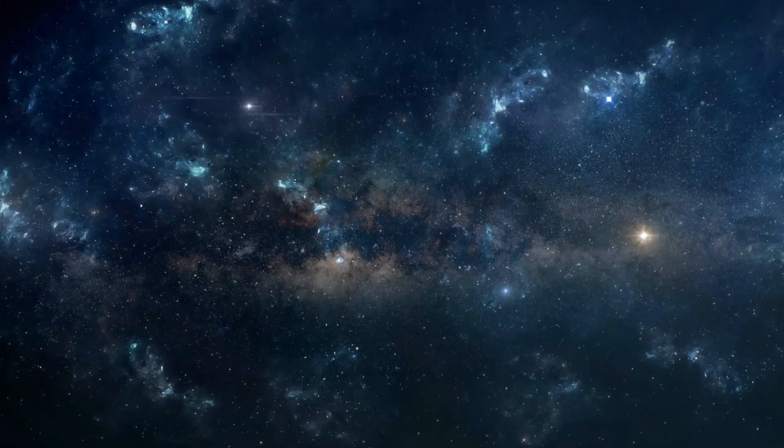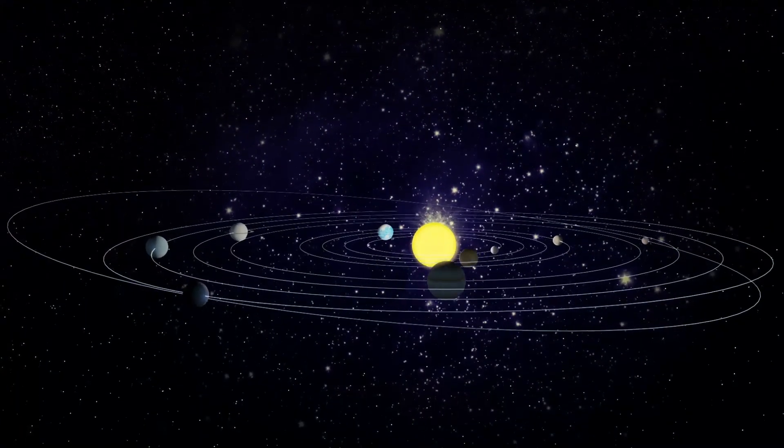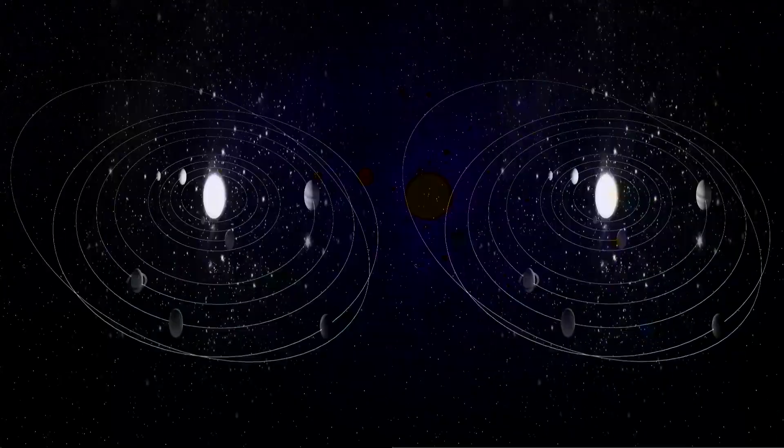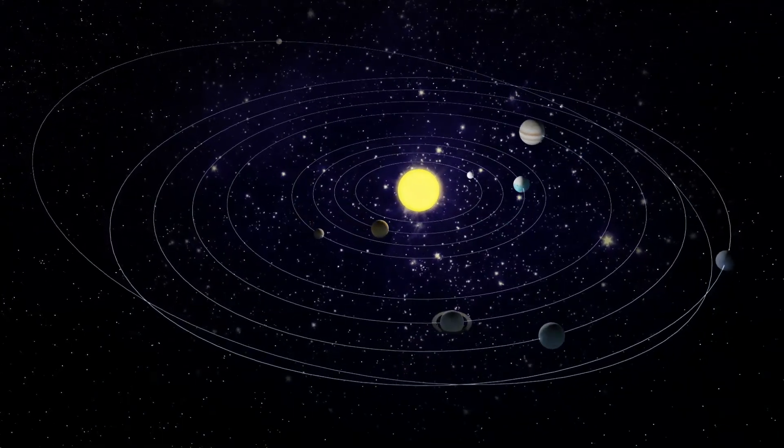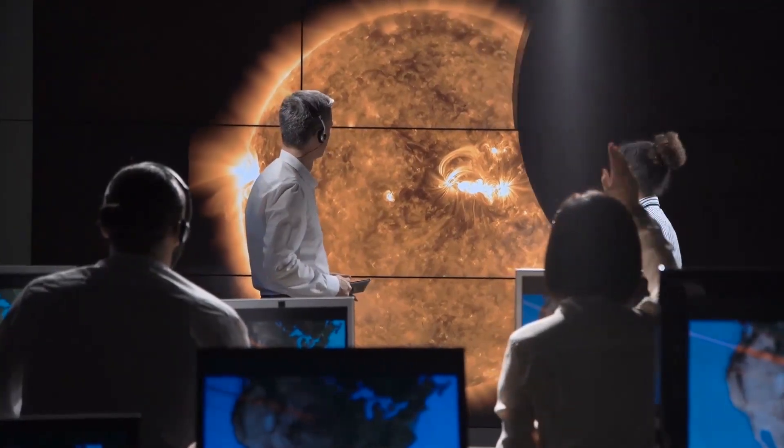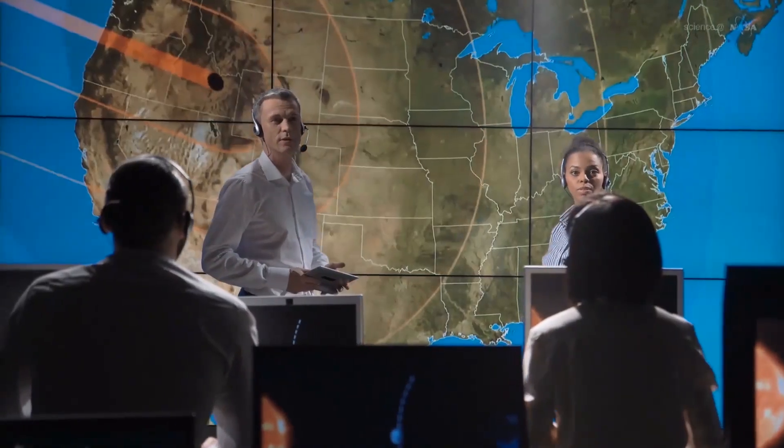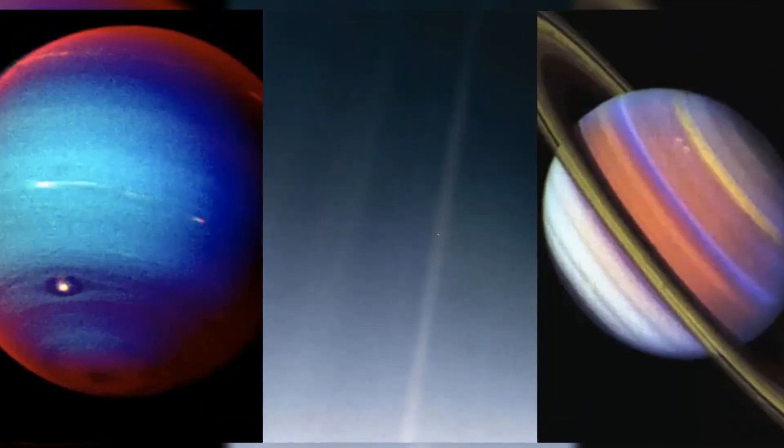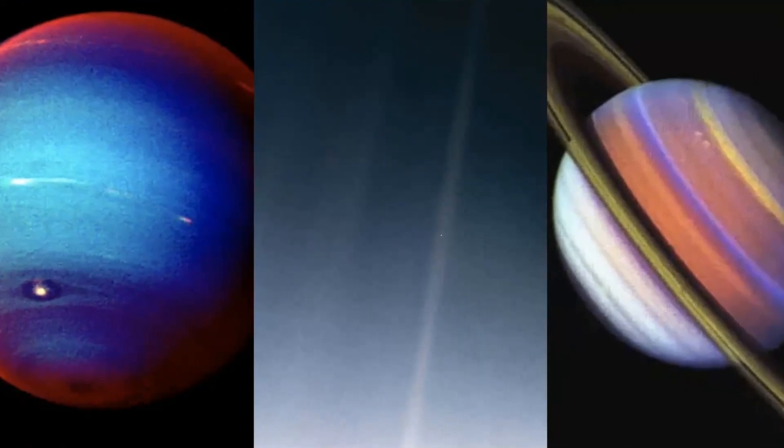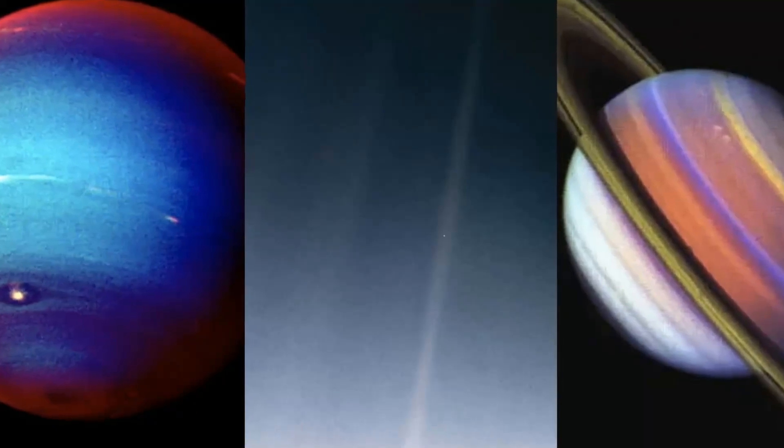Evidence suggests that the probe has reached a region of outer space called the interstellar medium. Even though both probes have moved beyond the influence of the solar wind, they are still a long way away from reaching the end of the solar system. NASA estimates it will take another 14,000 to 28,000 years for Voyager 1 to emerge from the Oort cloud and exit the confines of the solar system.